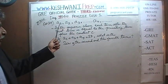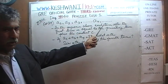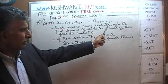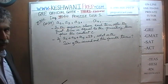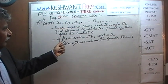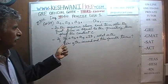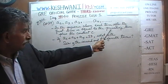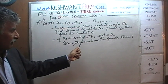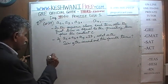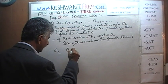The problem says we have a sequence: a1, a2, a3, all the way on to an, an+1, an+2, and so forth, forever. In this sequence, each term after the first term is equal to the preceding term plus the constant K. In other words, the first term is a1, and the next term is going to be a1 plus K.